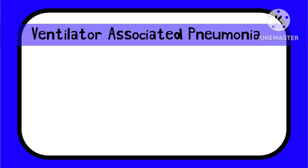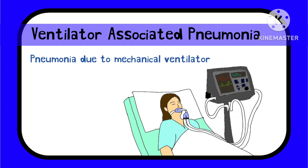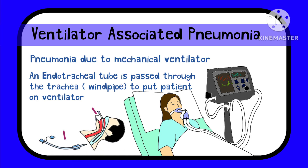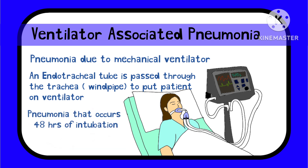Lastly, ventilator associated pneumonia is the pneumonia that results from a patient being placed on a mechanical ventilator, a device that assists breathing in patients who cannot do so effectively. To place a patient on a mechanical ventilator, an endotracheal tube is passed through the mouth into the trachea. When pneumonia occurs after 48 hours of intubation with an endotracheal tube, it is termed ventilator associated pneumonia.